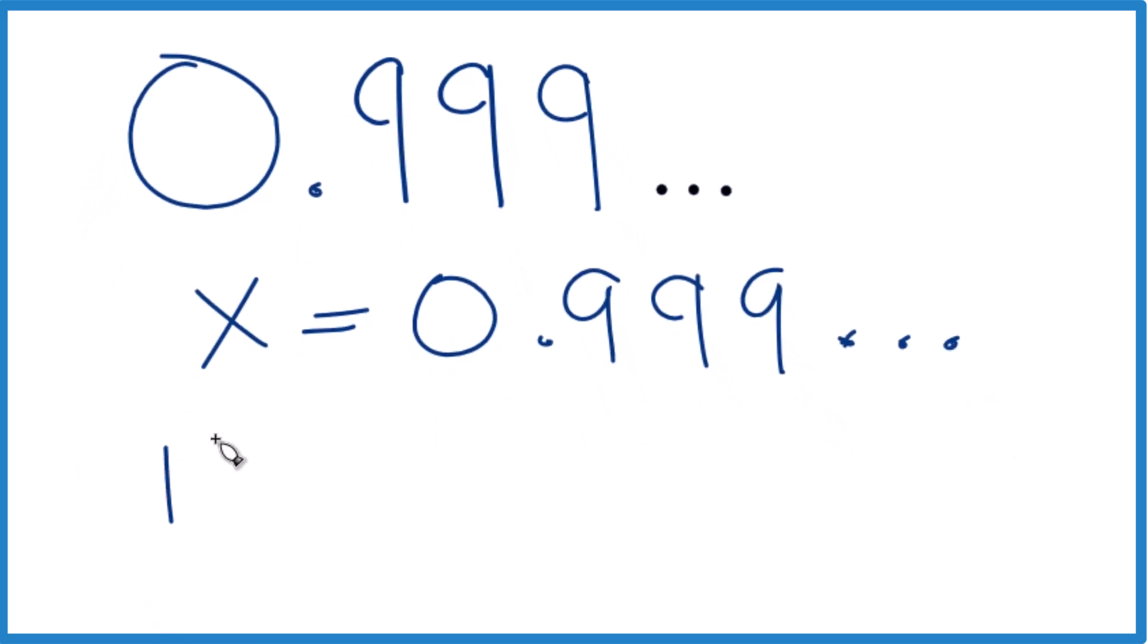So 10 times x, that would be 10x, and 10 times 0.999 repeating would be 9.999, just keeps going. All right, we're getting close because now we have a whole number here.